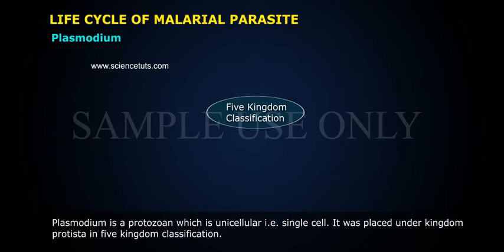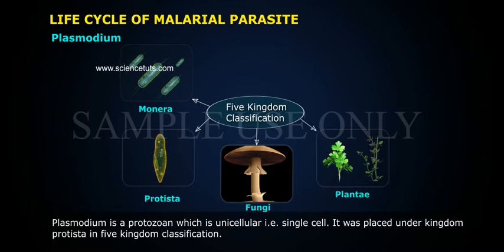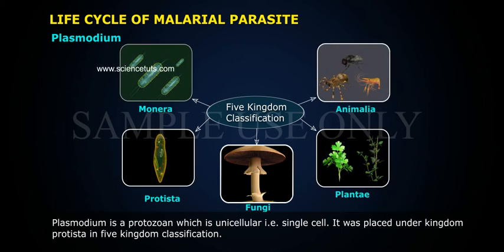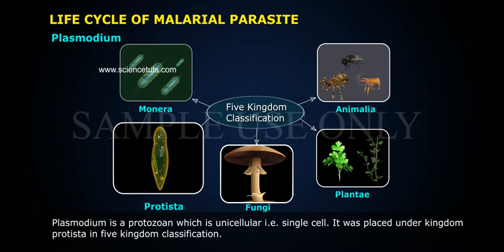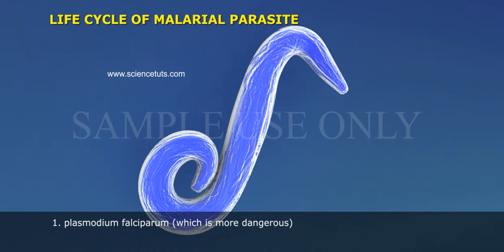Plasmodium is a protozoan which is unicellular, that is, single cell. It was placed under Kingdom Protista in Five Kingdom classification. Plasmodium has several species, such as: 1. Plasmodium falciparum, which is more dangerous.